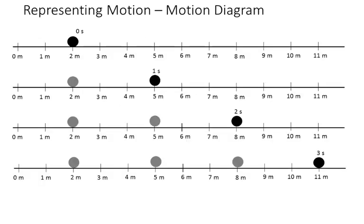So, here's one way that we can describe or represent motion. That's with a motion diagram. Here we have an object at time 0 seconds. And then after one second, it's here. After two seconds, it's here. And then after three seconds, it is here. So, since it's moved from a position of 2 meters to 5 meters to 8 meters to 11 meters, we can say that it is in motion.